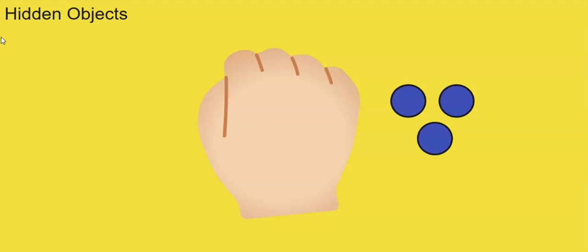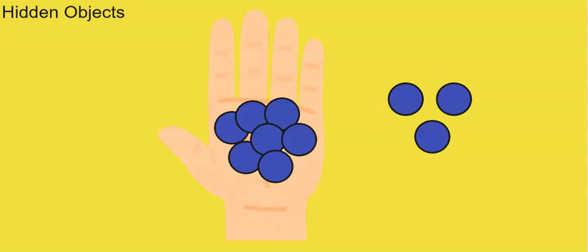So based on there being three showing, and we know that there was a total of 10 counters, how many do I have in my hand? You can see that there's seven in my hand. So we started with 10, we saw that there's three, the student should figure out there's seven.